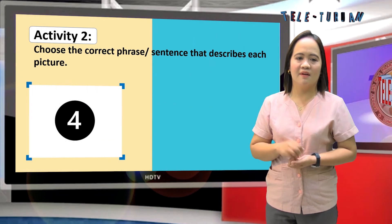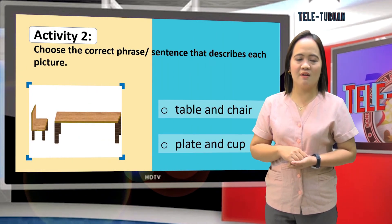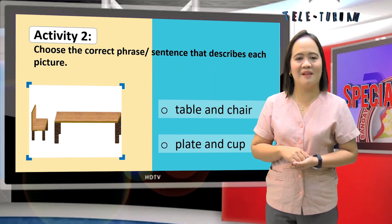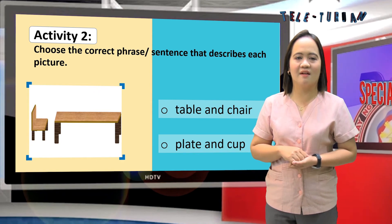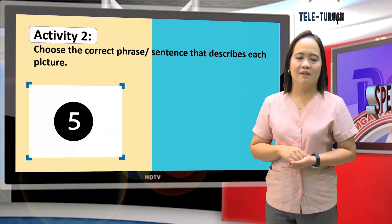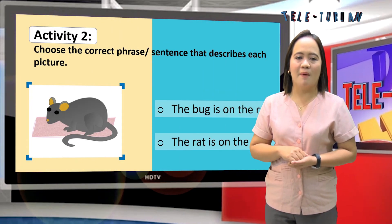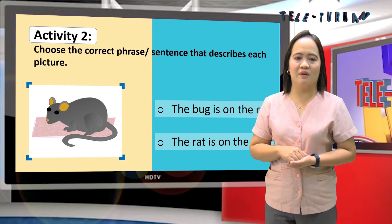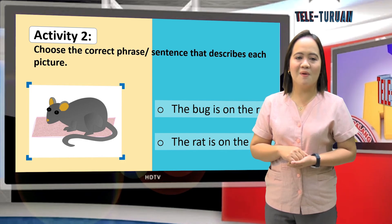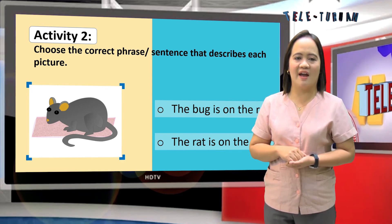Number 3: three empty cans, or three thin books. Number 4: table and chair, or plate and cup. Number 5: the bug is on the rug, or the rat is on the rug.